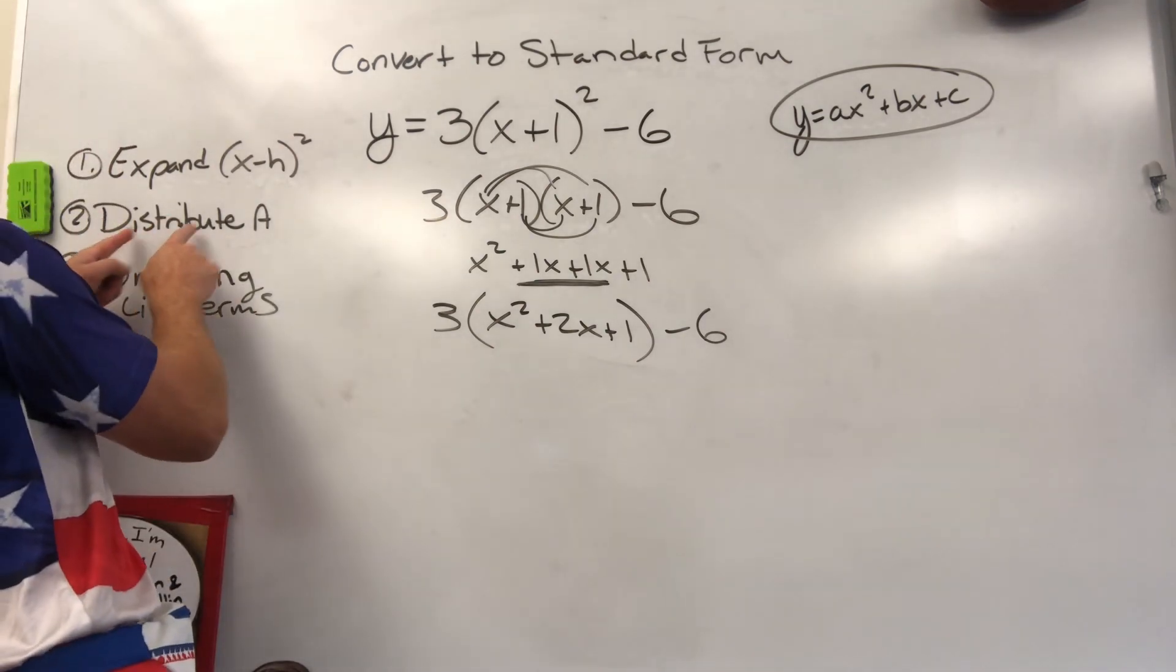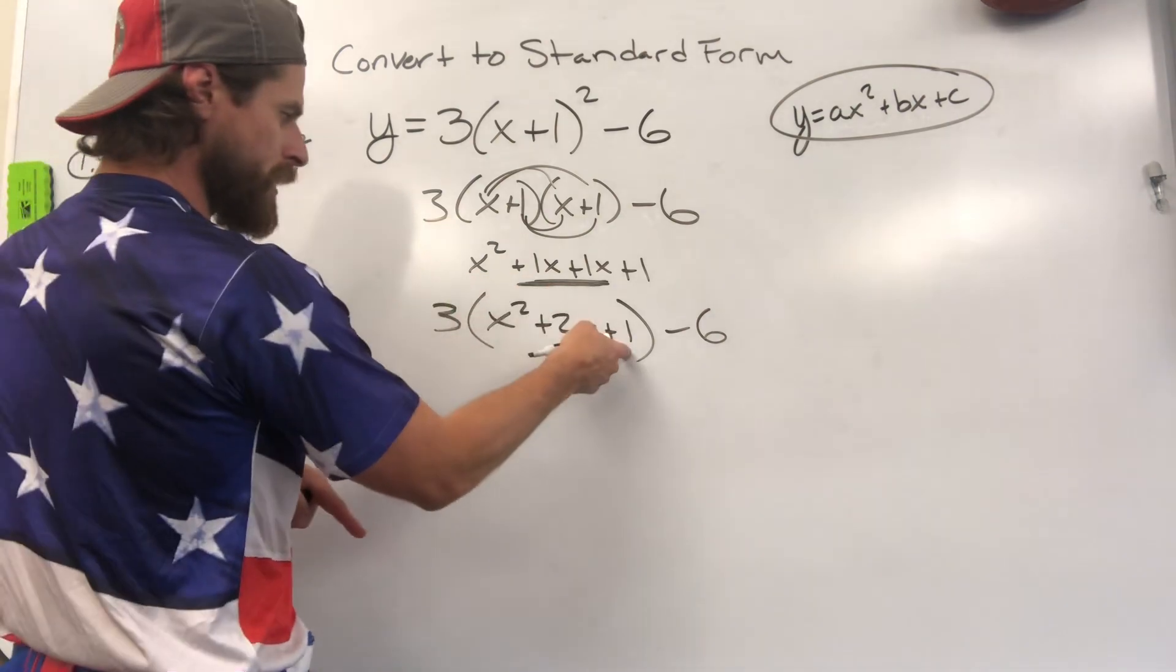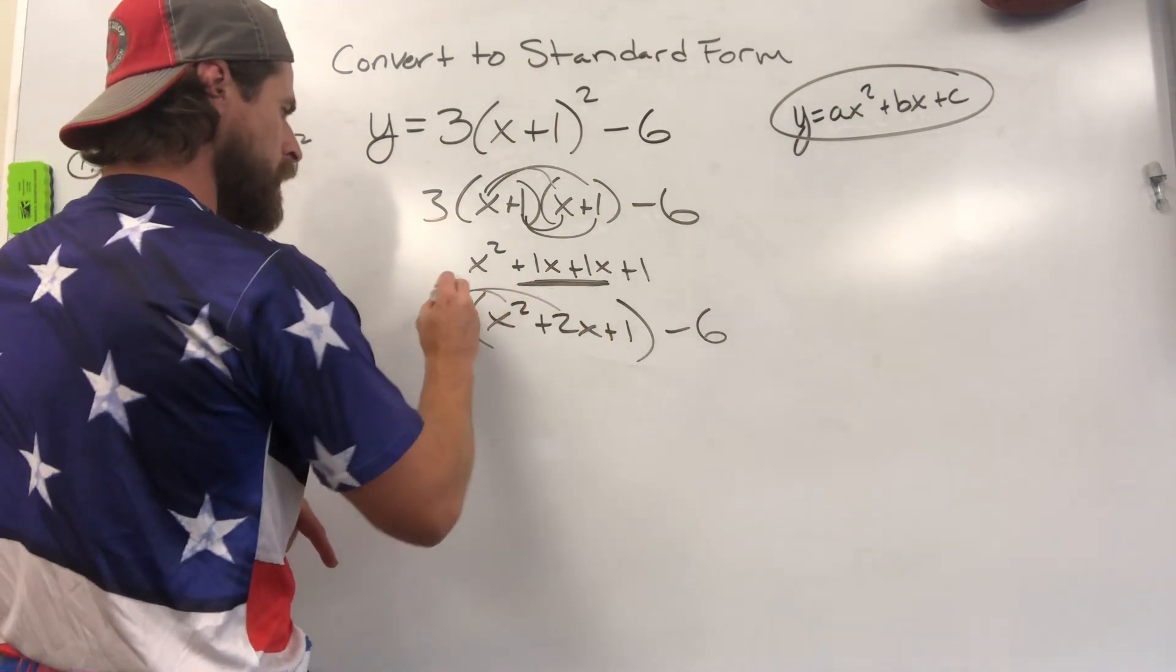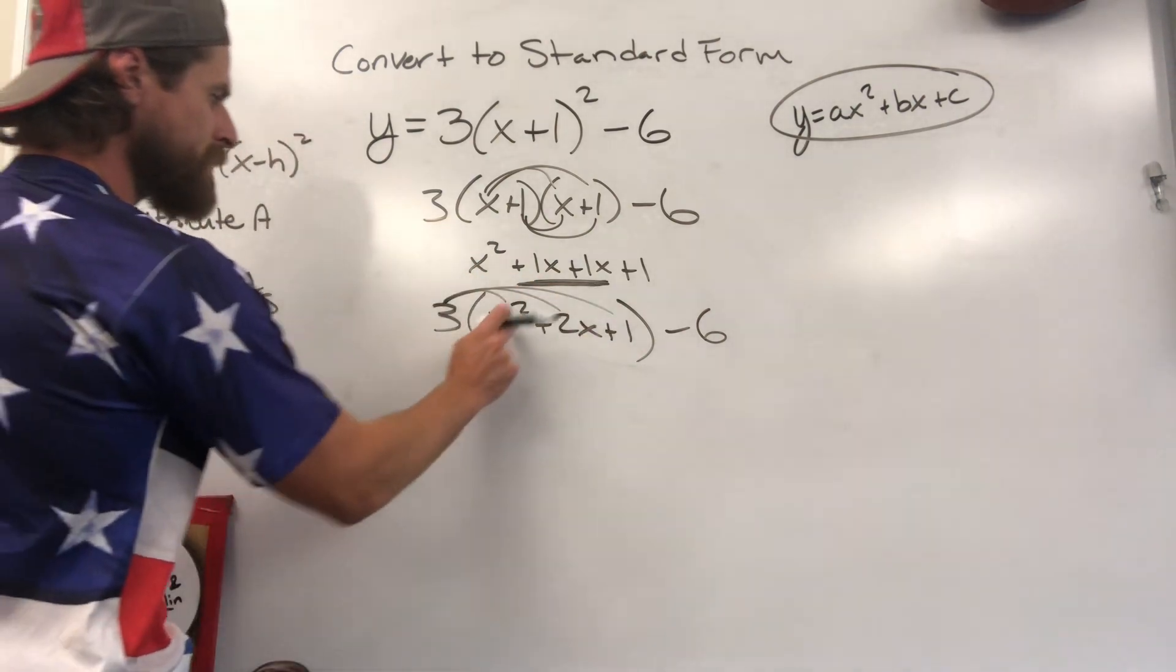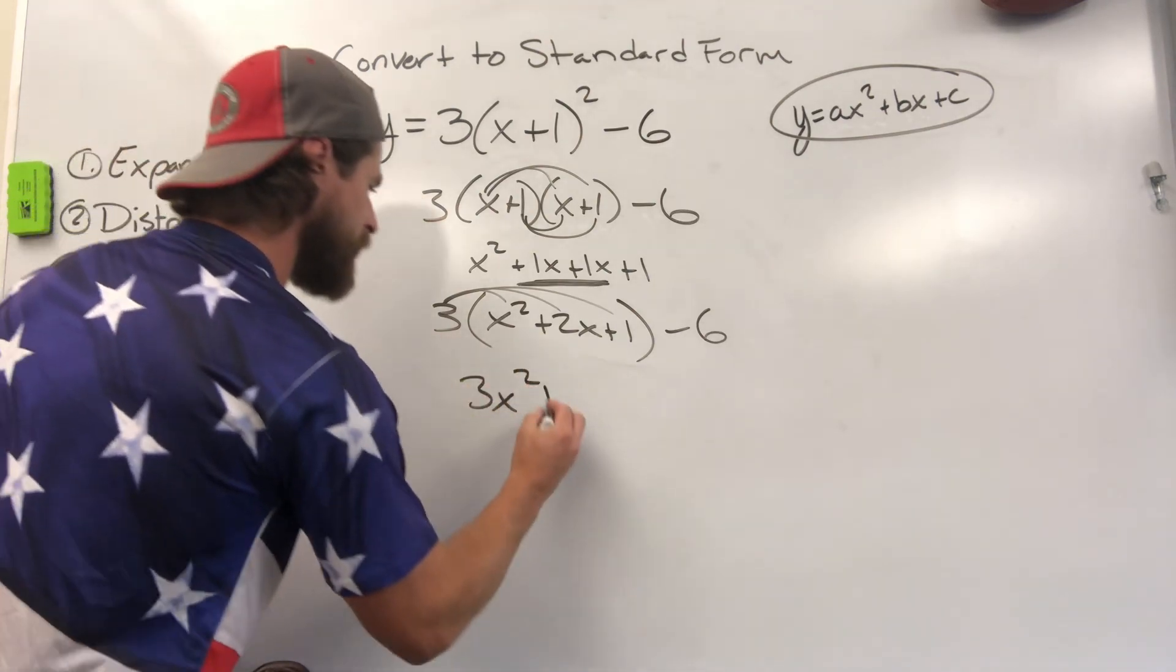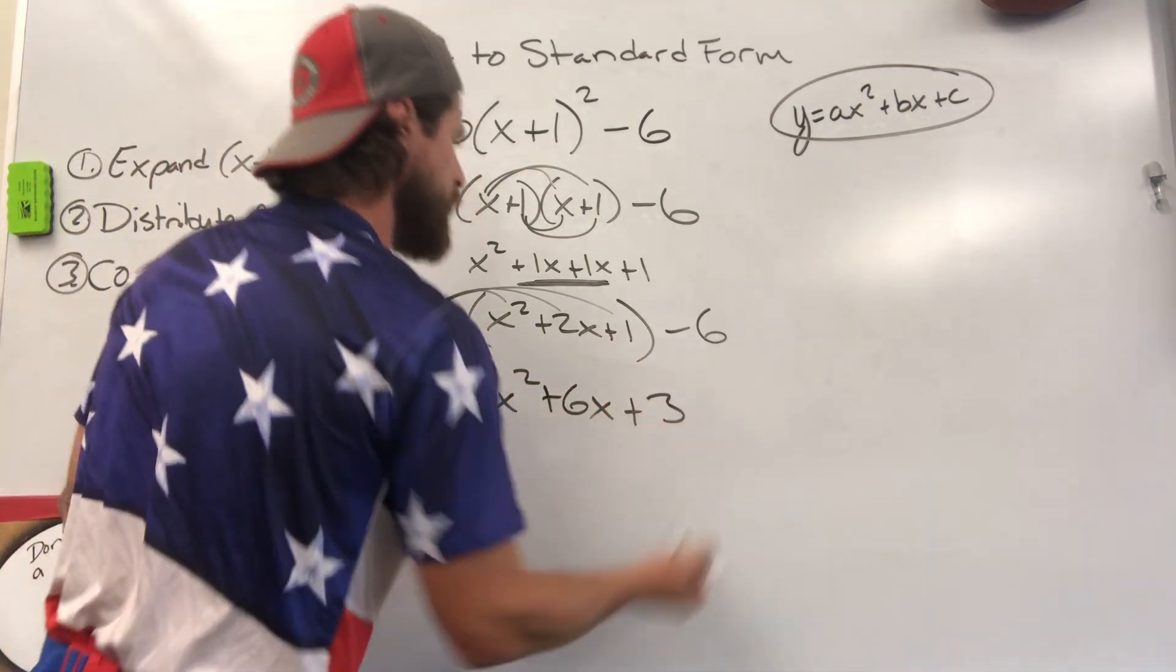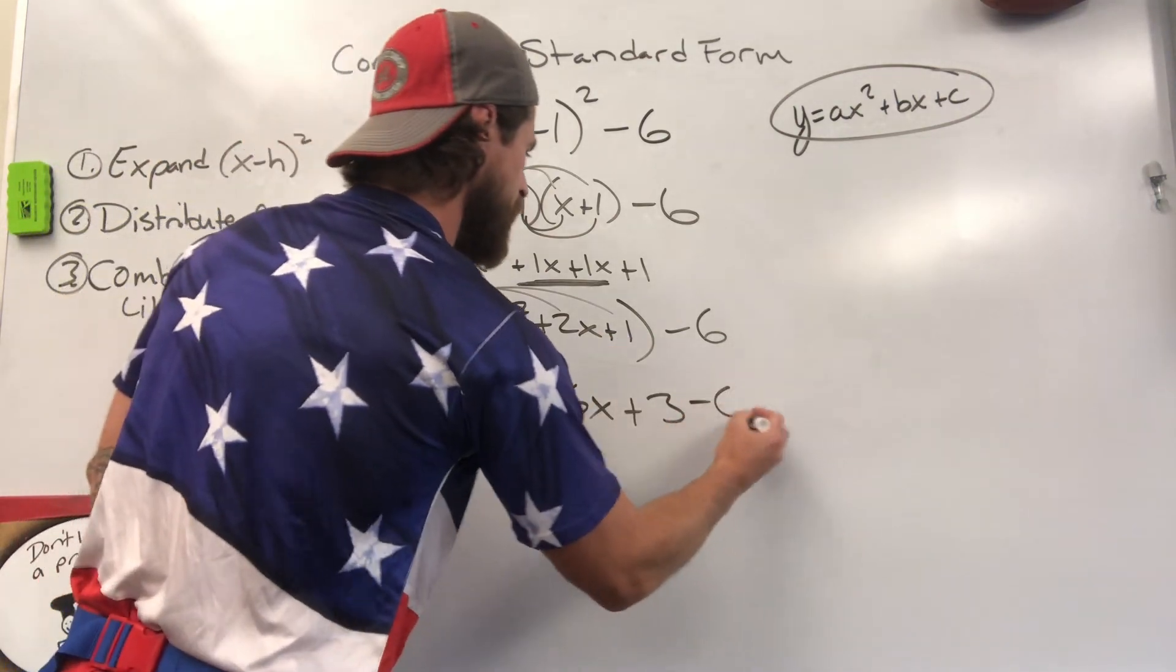It's time for us to now distribute a to one, two, three different terms in the trinomial. Three times x squared is three x squared. Three times two x is going to give you six x. Three times one is going to give you three minus six at the end.